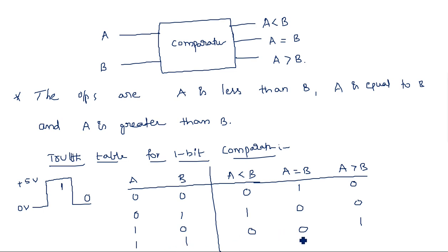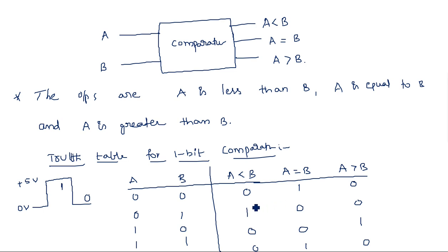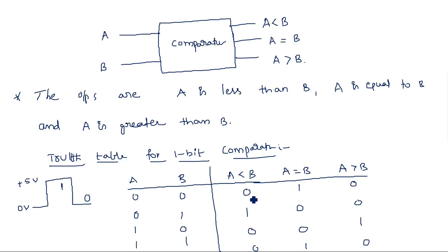When A equals 1 and B equals 1, both are having the same potential, so the equality output is 1 and the remaining two are zeros. Now, what is the expression for A less than B? For A less than B, the expression is obtained from the position where there is a 1, which is nothing but A-bar B.